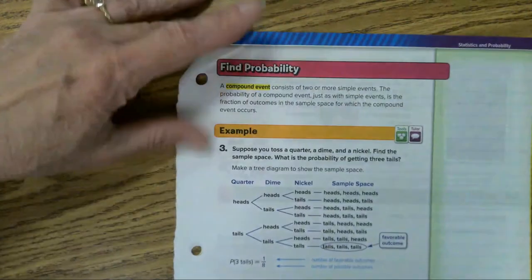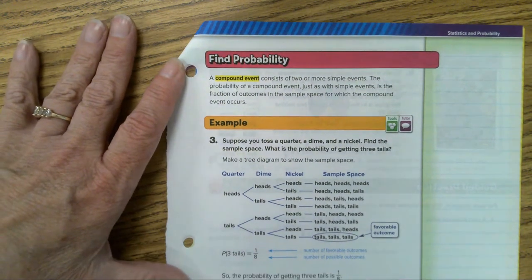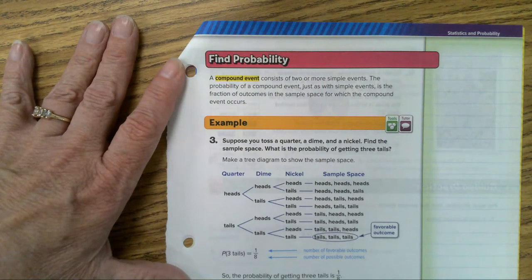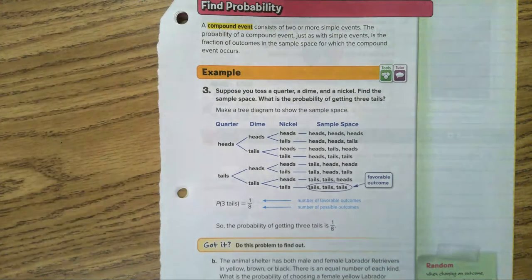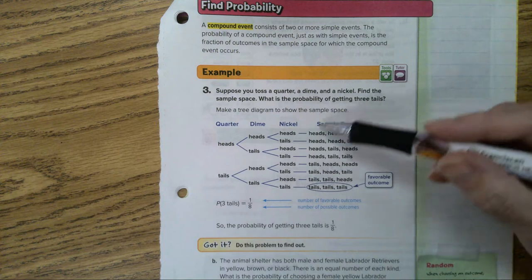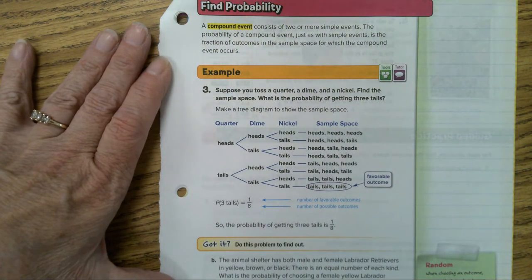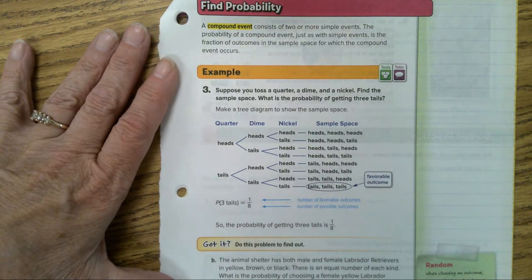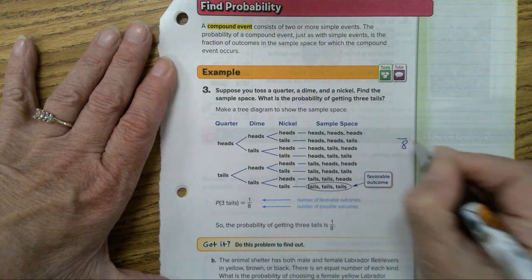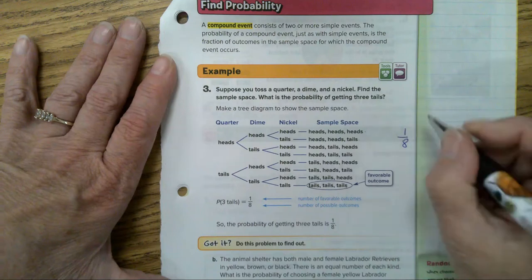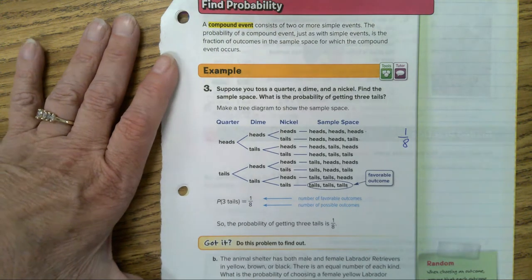Finding the probability of a compound event: a compound event consists of two or more simple events. The probability of a compound event, just as with simple events, is the fraction of outcomes in the sample space for which the compound event occurs. Suppose you toss a quarter, a dime, and a nickel — find the sample space. When you toss three coins there are eight possible outcomes, so the denominator is eight. There is only one way to get three tails, so the probability of three tails equals one out of eight.